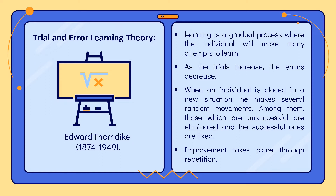According to this theory, when an individual is placed in a new situation, he makes a number of random movements. Those which are unsuccessful are eliminated and the successful ones are fixed. These random movements are not eliminated at once — in the first attempt their number is very large, but in subsequent attempts the number of errors diminishes and the range of activity becomes narrower. Gradually, the individual learns to avoid unnecessary movements and reaches the goal. Improvement takes place through repetition.